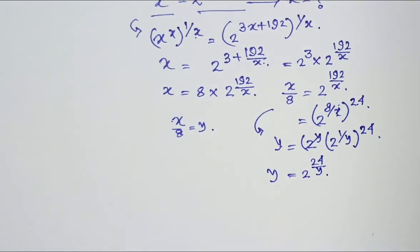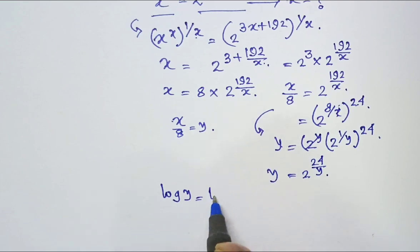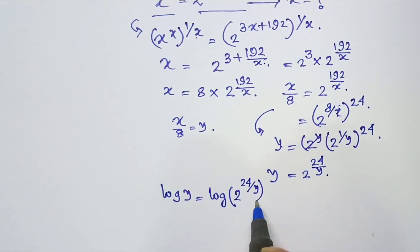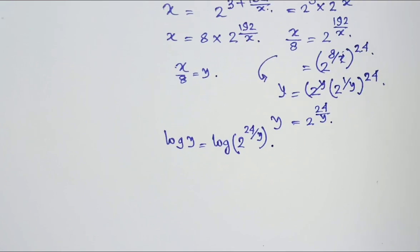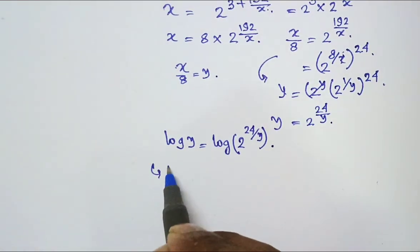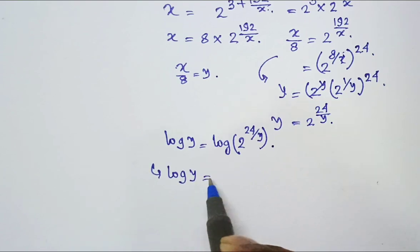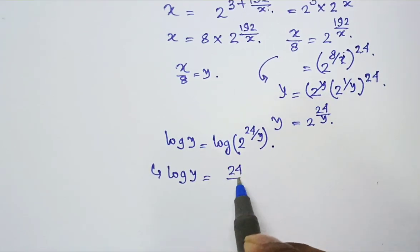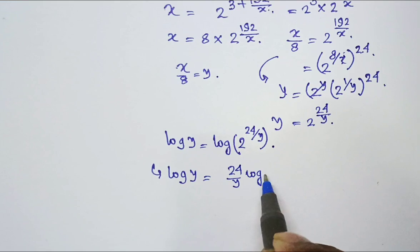Taking log in both sides I get that log y equal to log of 2 to the power 24 by y. Now we know that log of a to the power b is b log a that means log of y equal to 24 by y log 2.